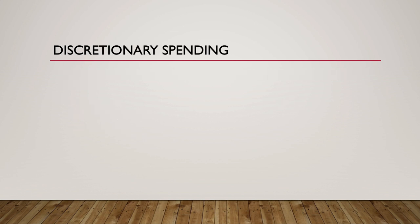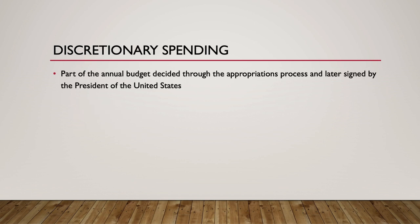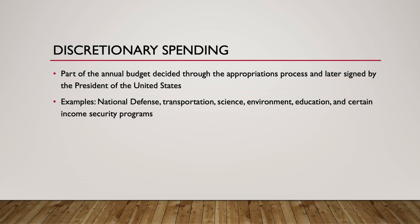Discretionary spending is part of the annual budget and is decided through the appropriations process of Congress and is later signed by the President. Examples of discretionary spending include spending on national defense, transportation, science, the environment, education, and certain income security programs.